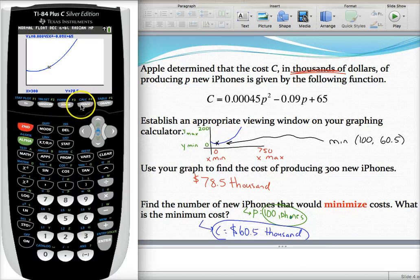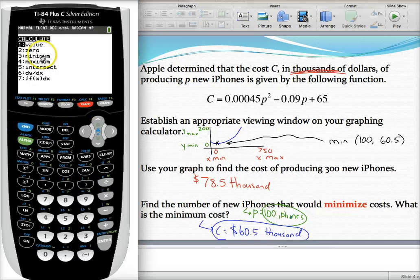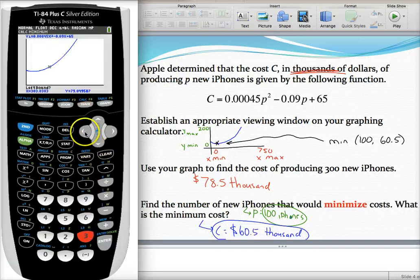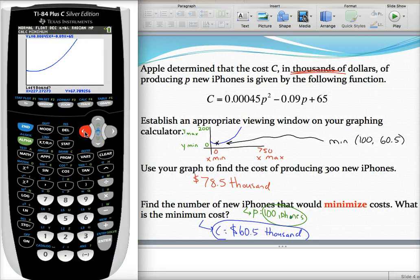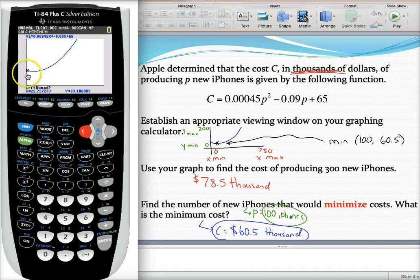To do this, hit second and trace. This time we want to select minimum, option three. They'll say go to the left of that value. Keep hitting your left key until your cursor is somewhere to the left of that vertex. You don't want to get too close to it. I can see it's swinging back up there.